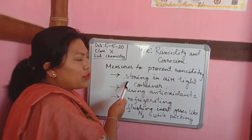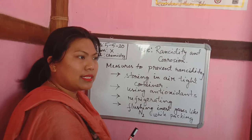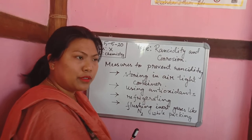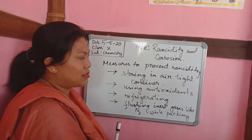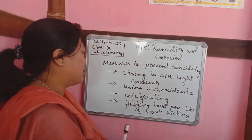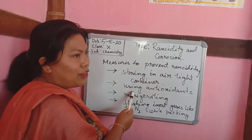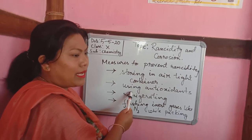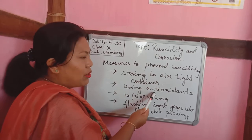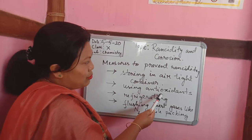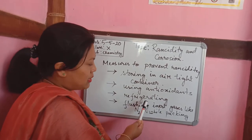Let me read out the methods or measures to prevent rancidity. Number one: you can store your food in an airtight container. If stored in an airtight container where air is not available, the oxidation process will slow down. You can also use antioxidants — many packaged foods you buy have antioxidants mixed in during packaging, which is one of the preventive measures. You can also refrigerate your food, which is another preventive measure.